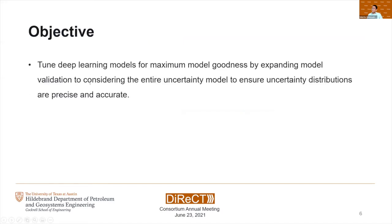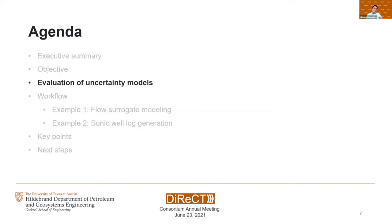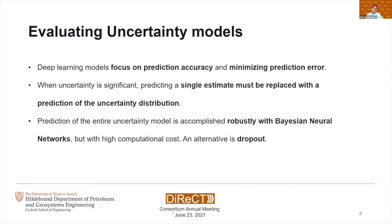The objective is to tune deep learning models for maximum model goodness by expanding model validation to consider the entire uncertainty model to ensure uncertainty distributions are precise and accurate. Deep learning models focus on prediction accuracy and minimizing prediction error, but for spatial models, accurate predictions along with accurate and precise uncertainty models are critical. When uncertainty is significant, predicting a single estimate must be replaced with a prediction of the entire uncertainty distribution, and this is accomplished robustly with budgeted neural networks, but with a high computational cost, so an alternative is to use dropout.